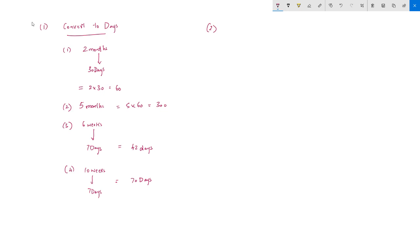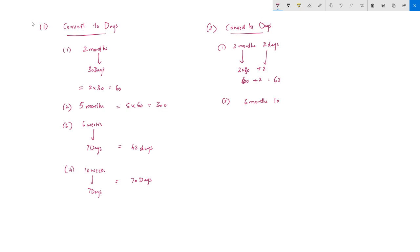The second type of problem is a more advanced conversion where you have a combination, like 2 months 2 days. Here, 2 months = 2 × 30 = 60 days, plus 2 days, giving 62 days. Another example: 6 months 10 days — 6 × 30 = 180, plus 10, that gives 190 days.